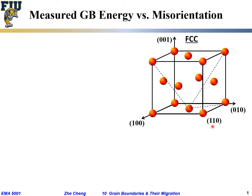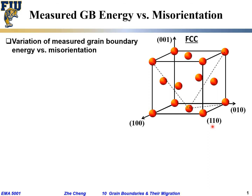As we mentioned, the grain boundary energy would change with misorientation, and we can examine this along different crystal directions. For example, if we use [100] as our rotation axis, we can look at how the energy changes as we rotate the two grains away from the [100]-type plane.